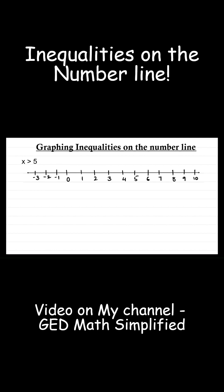So how do we represent it on the number line? This way. Look, so this red line represents all the solutions of this inequality. So x means it is more than 5. That's why this red line is going above 5.